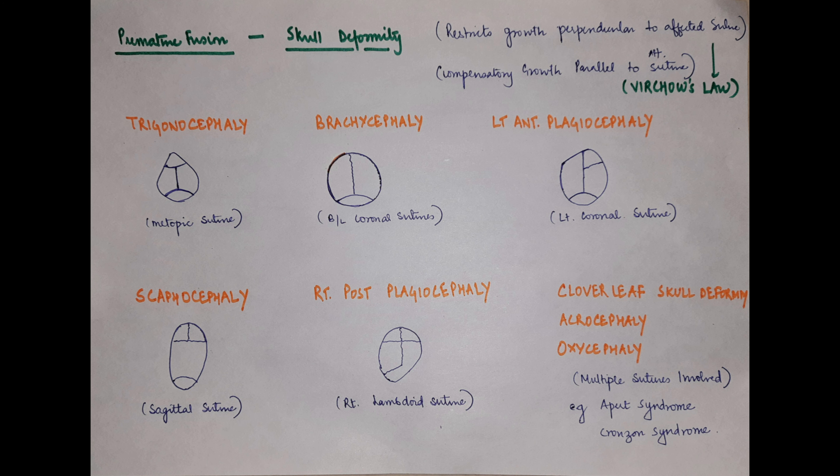In craniosynostosis, premature fusion of the sutures occurs. This premature fusion restricts the growth perpendicular to the affected suture, and it leads to compensatory growth parallel to the affected suture, which leads to abnormal formation of the skull shape — we call it a skull deformity.